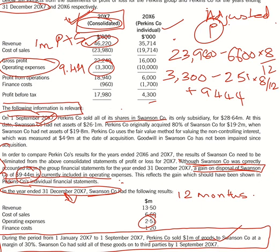For finance cost: consolidated finance cost is 960 minus the subsidiary's finance cost of 1,200 (1.20) multiplied by 8/12. That's it for the finance cost part.